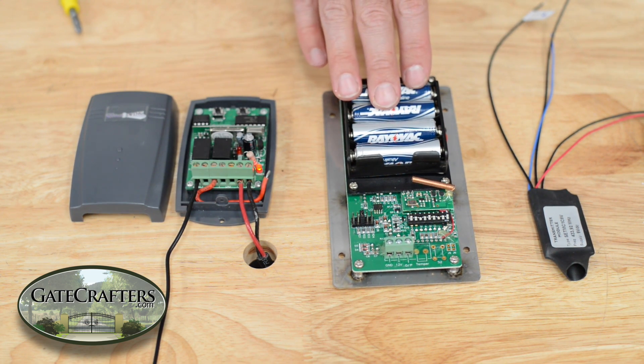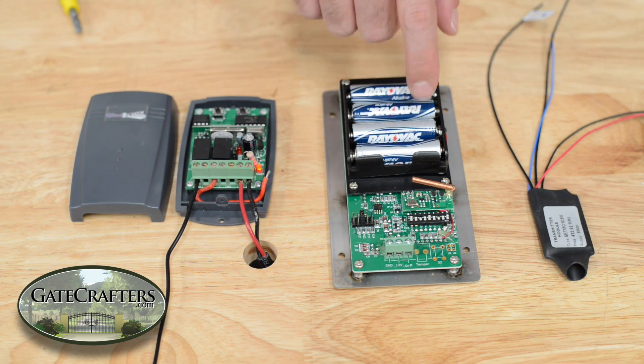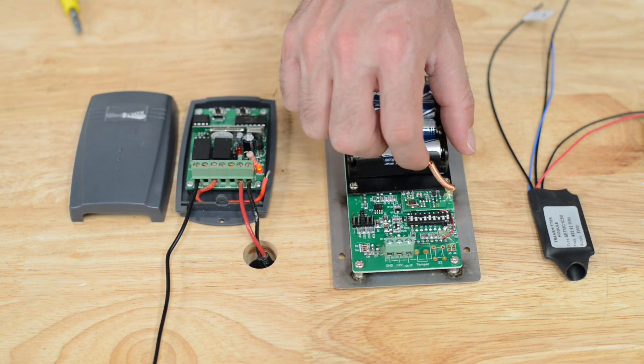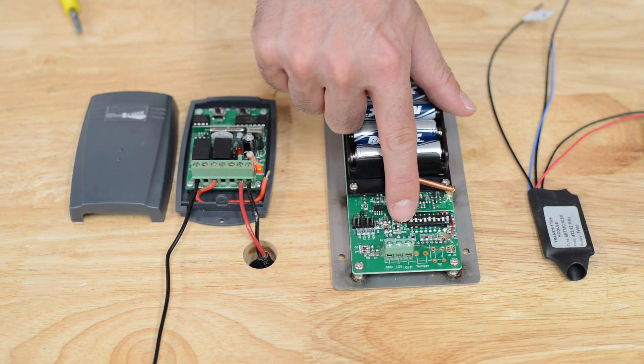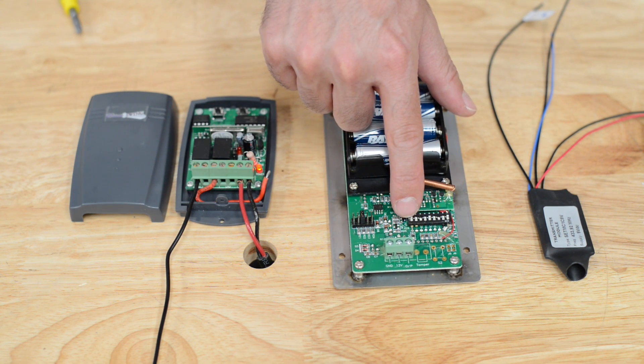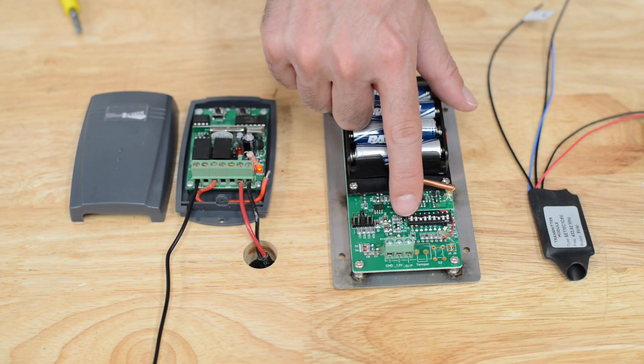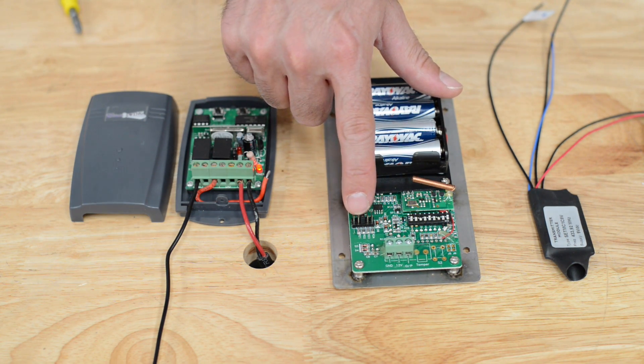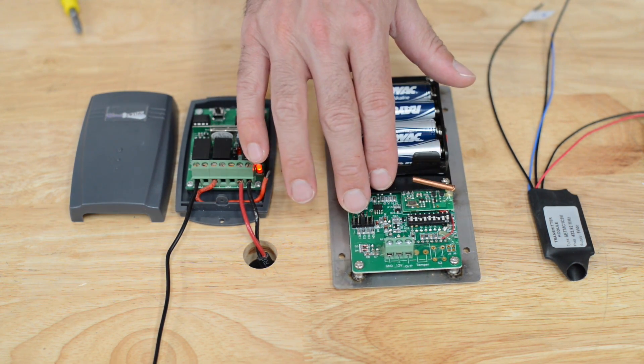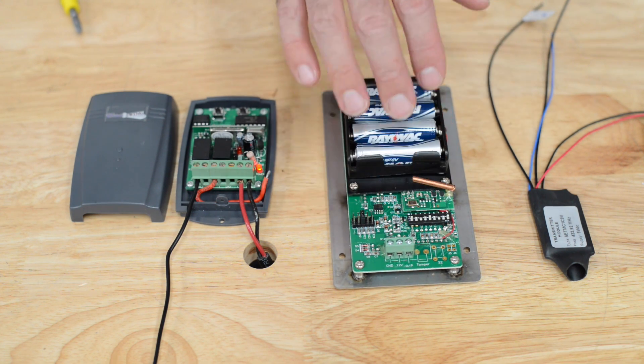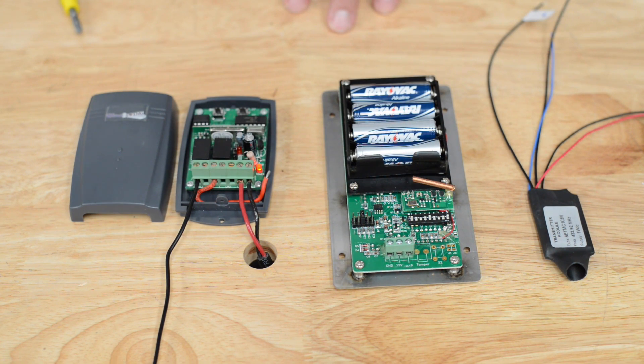The GateCrafters stainless steel keypad is built with a 318 megahertz transmitter inside. This is your transmitter antenna. These are the learning dip switches for 318 megahertz, and this is the output time for the 318 megahertz. You will not be using this feature because you are doing 433 megahertz.